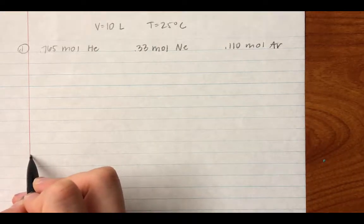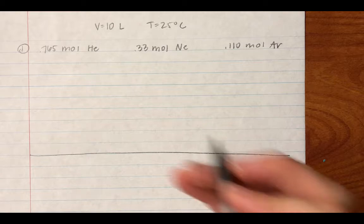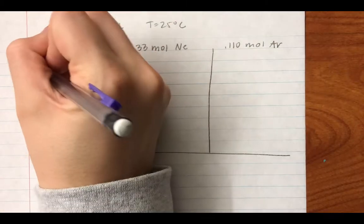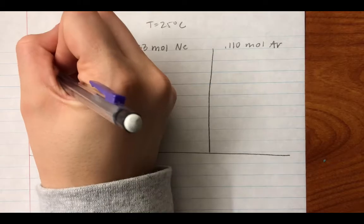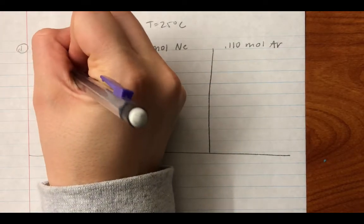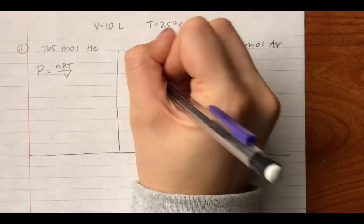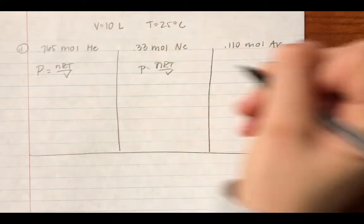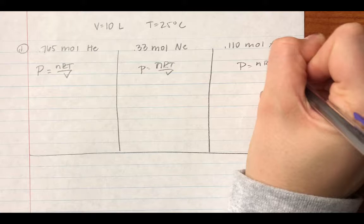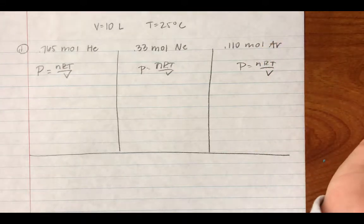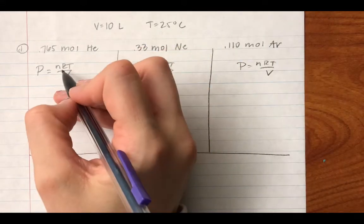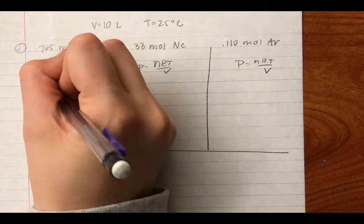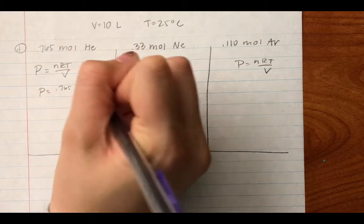I'm going to start by showing you using the ideal gas law for each. So PV equals NRT. If I'm solving for P, it's going to be NRT over V for each one of these. So I'm going to use my number of moles, my ideal gas law constant, my temperature, and my volume.